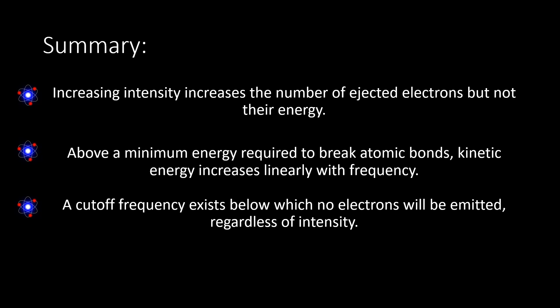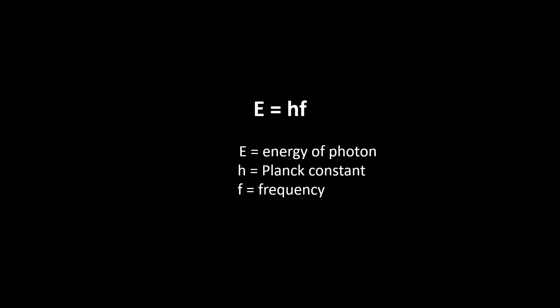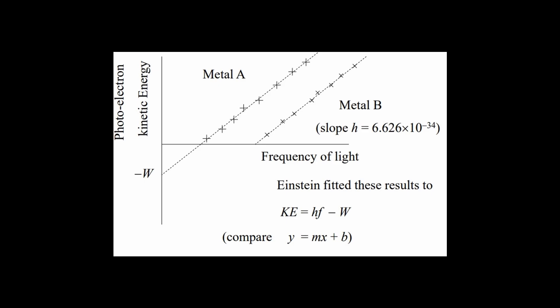In essence, this led to help establish the equation for photon energy, which is E equals HF, where E is the energy of a photon, H is Planck's constant and F is frequency. And therefore, by plotting kinetic energy versus frequency, we can express the kinetic energy of an electron as a slope, which is analogous to Y equals MX plus B. Where KE equals HF minus W, where KE is the kinetic energy of an electron, W is the work function, and HF is the energy of a photon. And this equation is actually typically expressed as HF or the energy of a photon equals kinetic energy plus the work function.